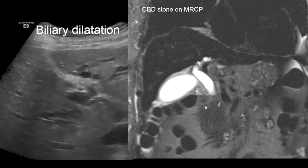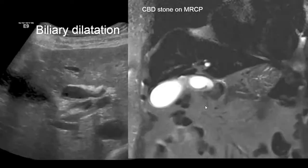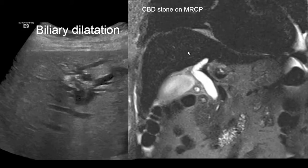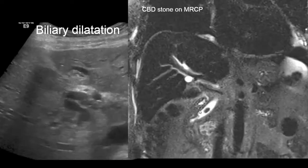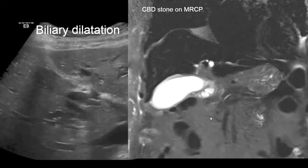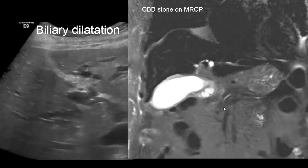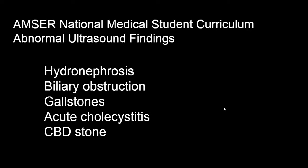We saw an example of a pancreatic mass earlier which causes intrahepatic dilatation; in this case we have a CBD gallstone causing the intrahepatic biliary ductal dilatation. That is a summary of some of the abnormal findings we can see by ultrasound, with subsequent workup by MRCP in the setting of biliary obstruction, or HIDA scan if there is equivocal concern for acute cholecystitis.